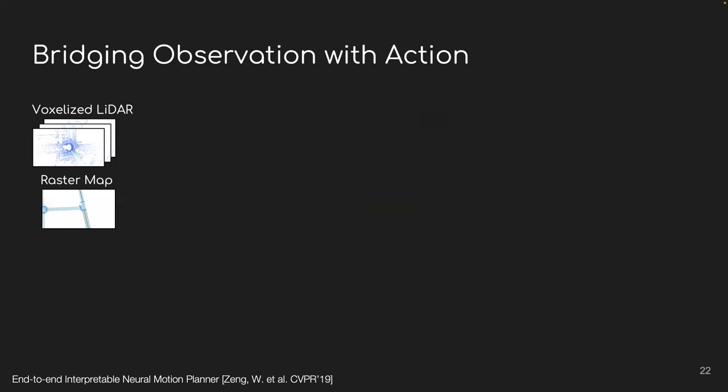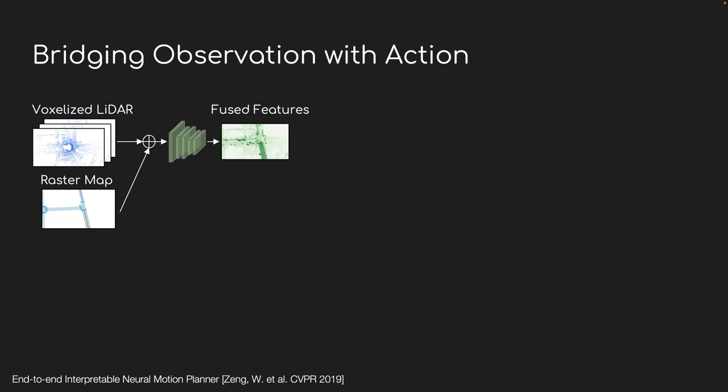So our observation or input data are sensory data, including LiDAR and high-definition maps. We feed them into a convolutional neural network and extract high-dimensional features that encode rich contextual information about the environment. From there, if we only want to do object detection following standard routine, we just need to classify and regress the position of different bounding boxes and combine them into detection bounding boxes.